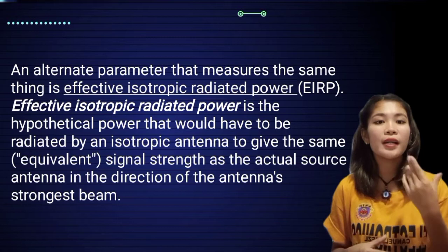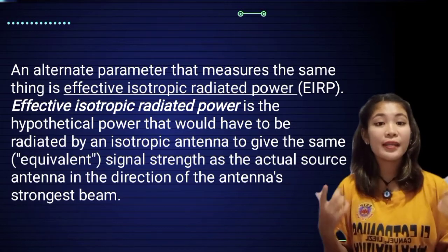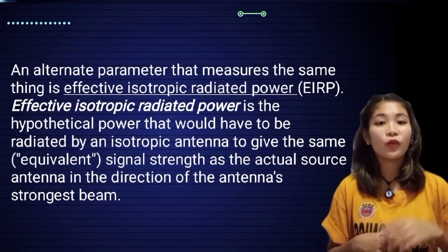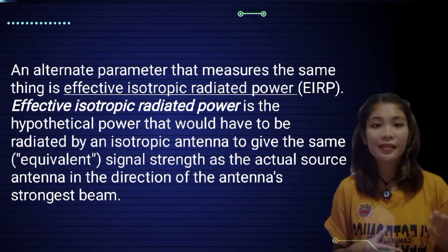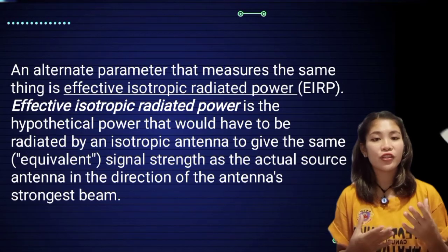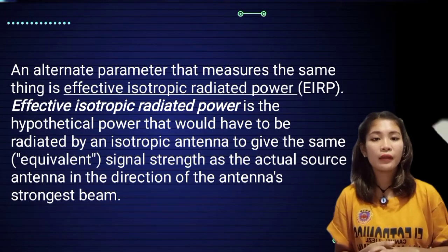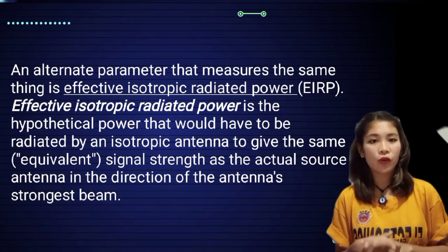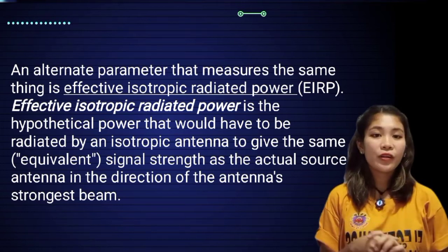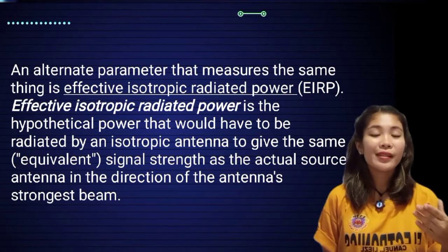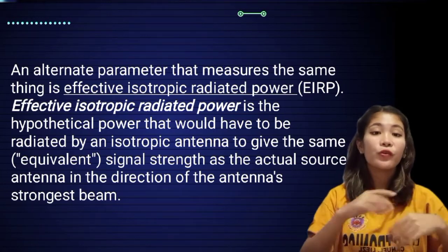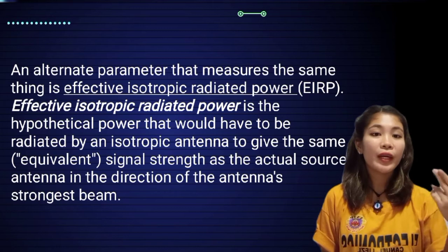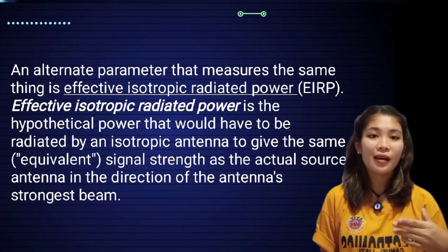Kasi nagme-measure din siya gaya nung sa ERP. This radiated power is based on an isotropic antenna, to give the same equivalent signal strength as the actual source antenna in the direction of the antenna's strongest beam. Para magkaroon siya ng direct line, yung EIRP kinakailangan niya ng isotropic antenna. Pag sinabi nating isotropic antenna, this is the hypothetical antenna having the same radiation in all directions — kumbaga meron siyang uniform direction, kaya kinakailangan siya ng EIRP.